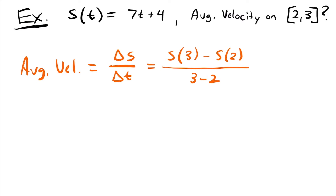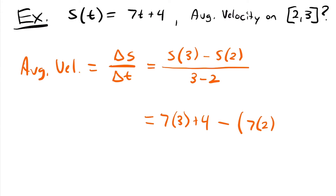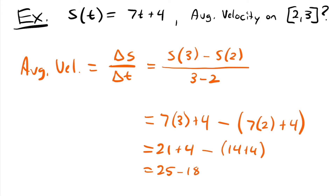We can plug in our values into our position function, and the denominator reduces to 1, so we can essentially ignore it. We get 7 times 3 plus 4, minus 7 times 2 plus 4. Simplifying: 21 plus 4 minus 14 plus 4, which gives us 25 minus 18, equal to 7. That would be our average velocity over this period of time.